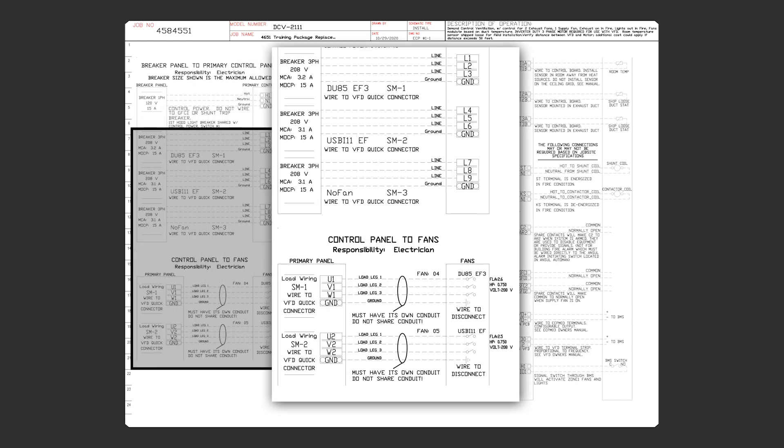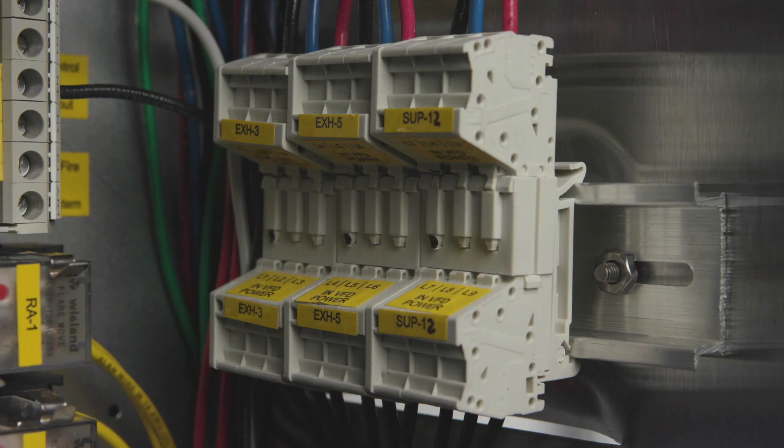For example, here's the wiring for an exhaust fan being controlled by VFD. You see here, the high-voltage wiring comes from the breaker in the building's breaker panel to terminals L1, L2, and L3 in the control package. These terminals are located here.